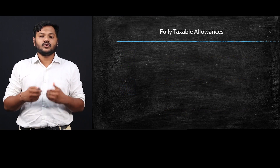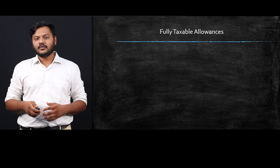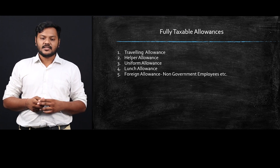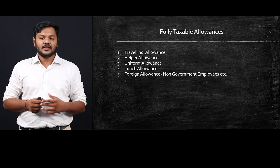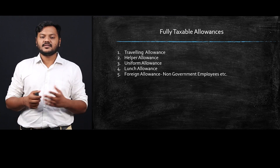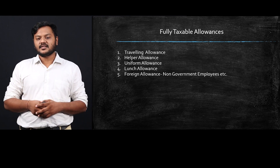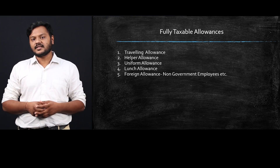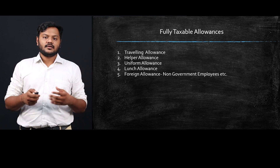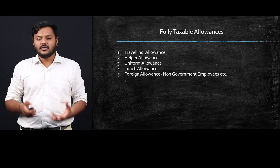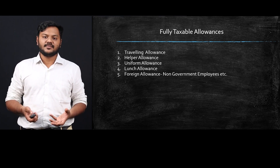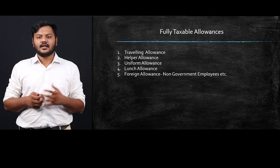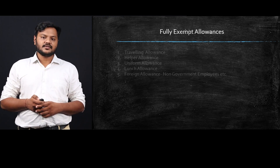Now let's talk about fully taxable allowances — those allowances which are fully taxable irrespective of your employer, age, or job. These include traveling allowances, helper allowances, uniform allowances, lunch allowances, and foreign allowances for the purpose of a foreign tour. For uniform allowances, if the company provides an amount for buying a uniform, those allowances are also completely taxable. There are certain other allowances also covered under fully taxable.